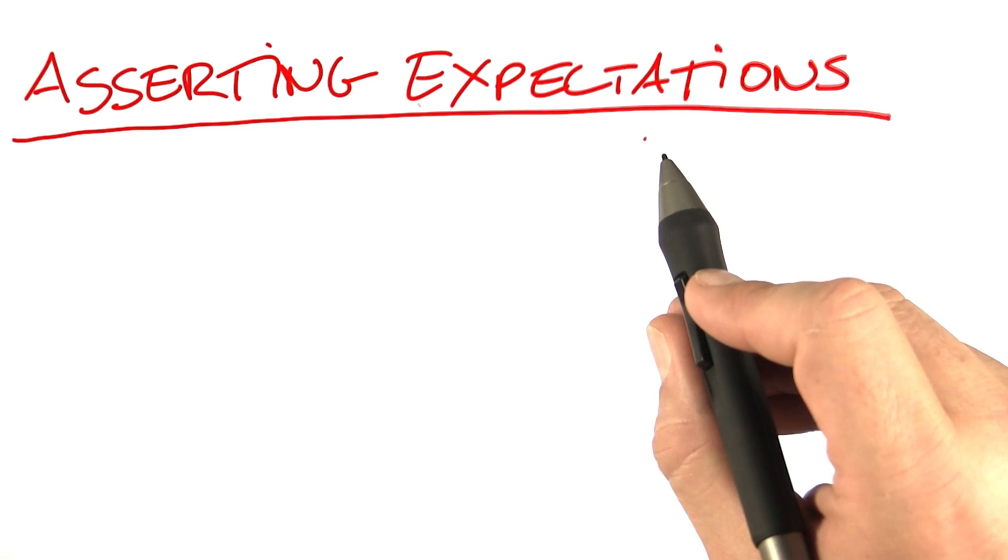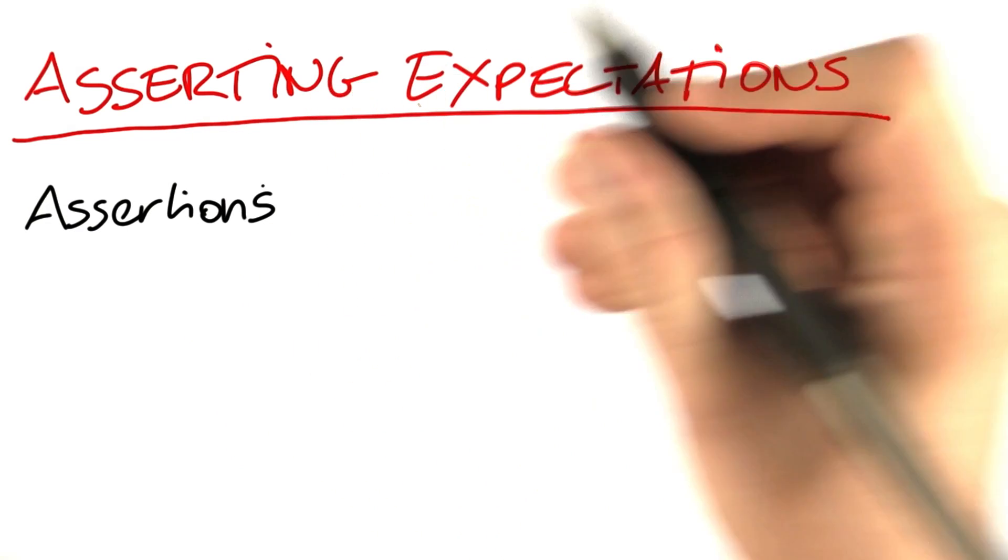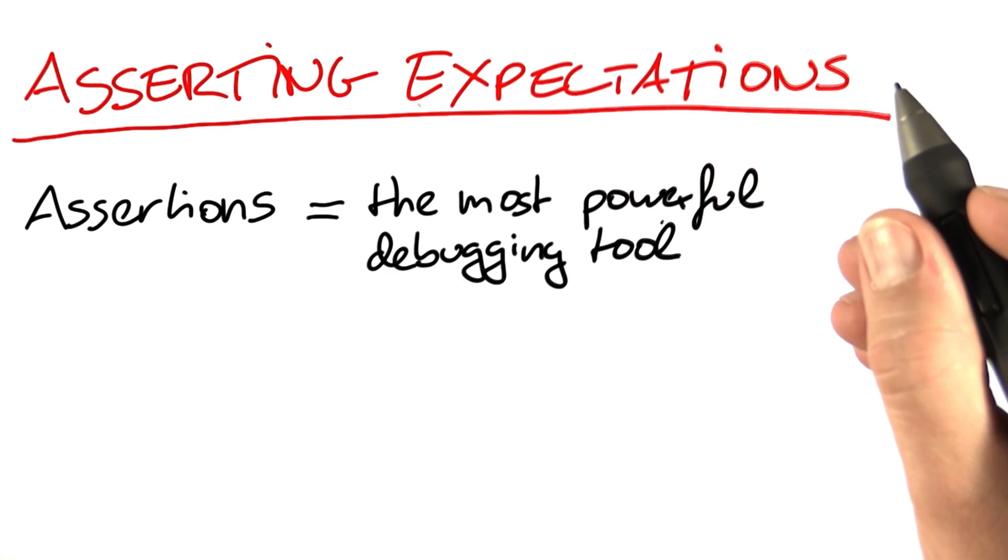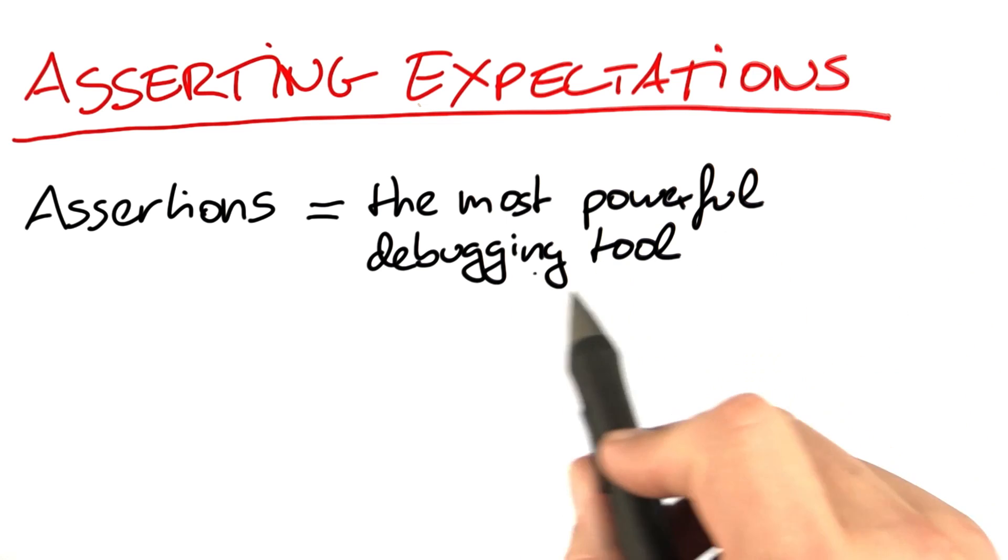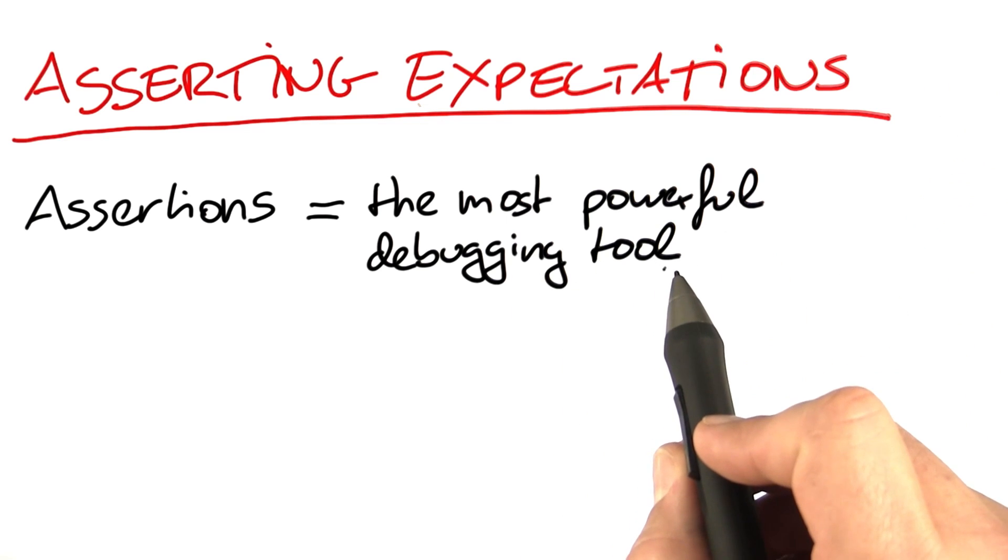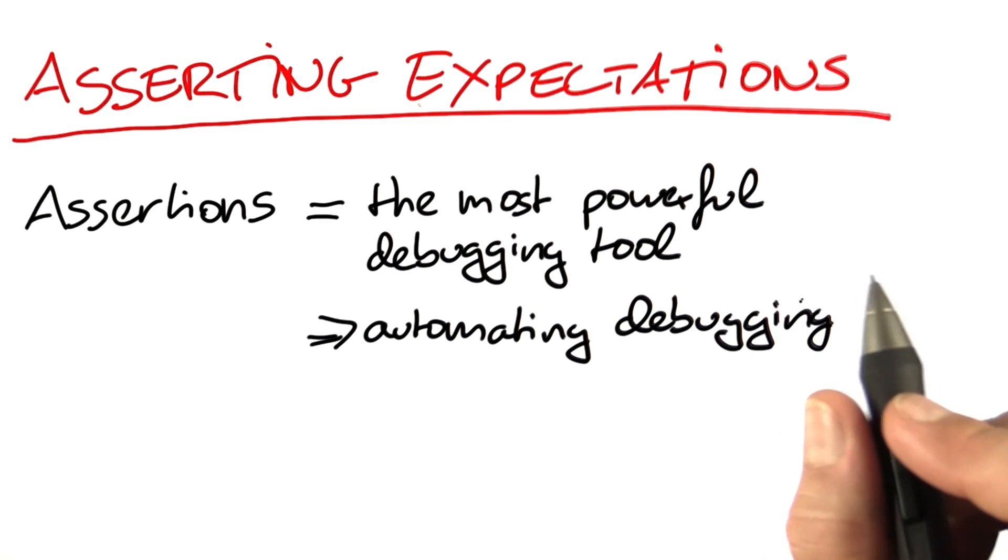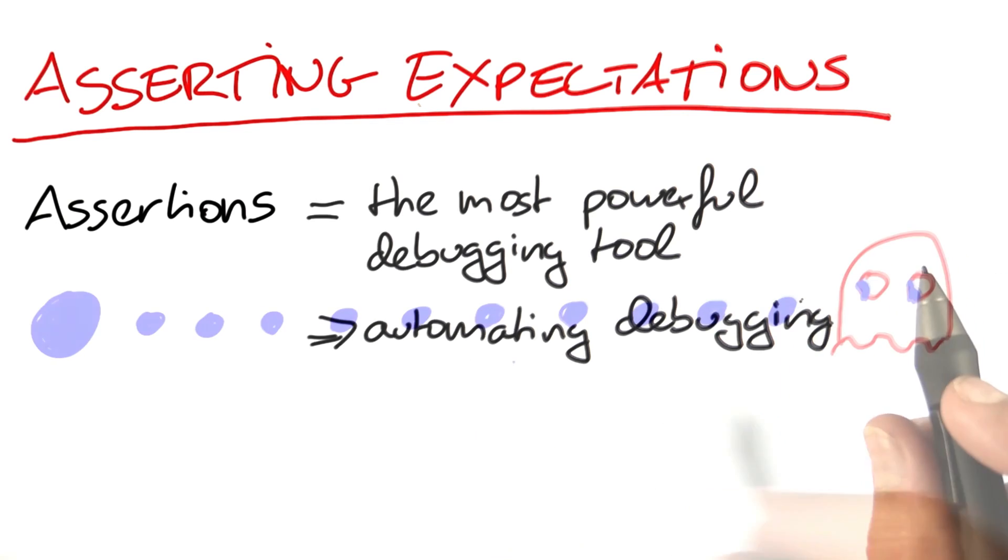Today we will explore assertions, that is, statements in the program that automatically check for errors during execution. Assertions are by far the most powerful debugging tool, in particular because they are the key to automating debugging. That is, debug while you sleep.